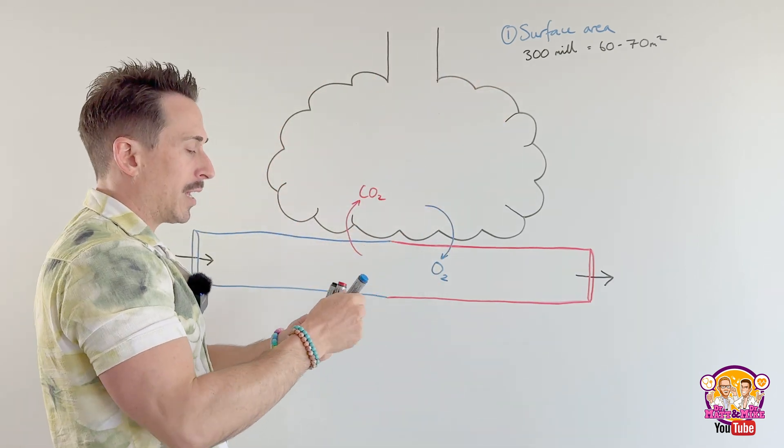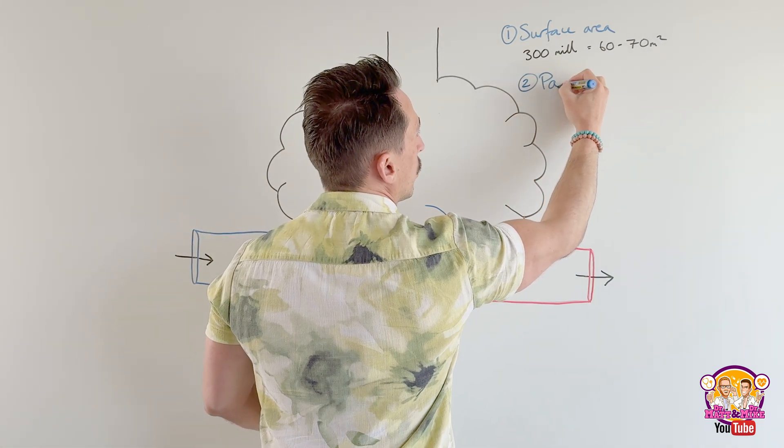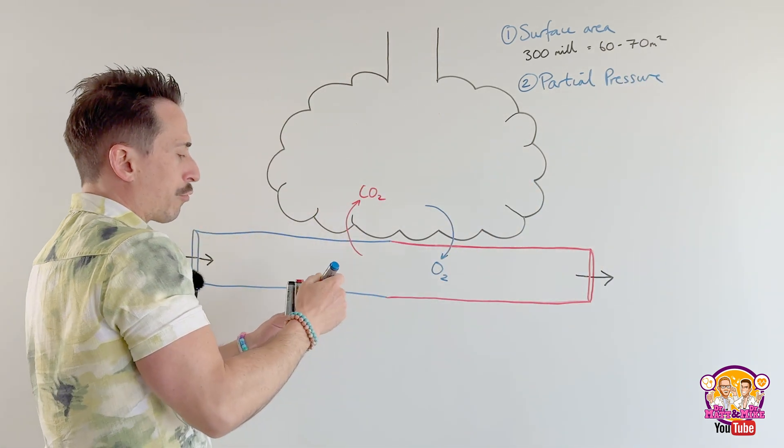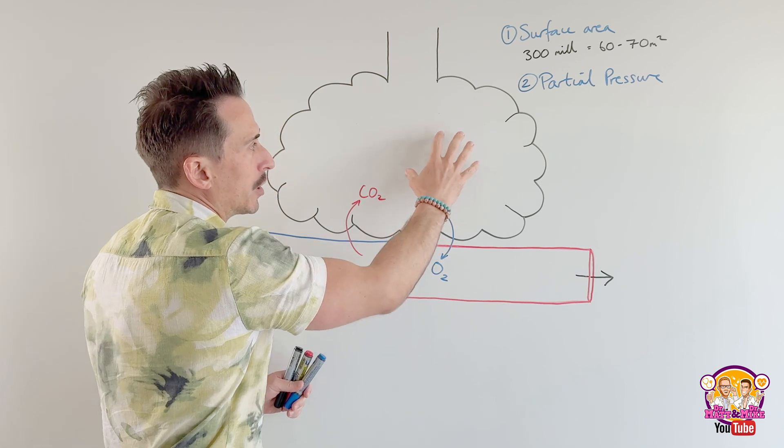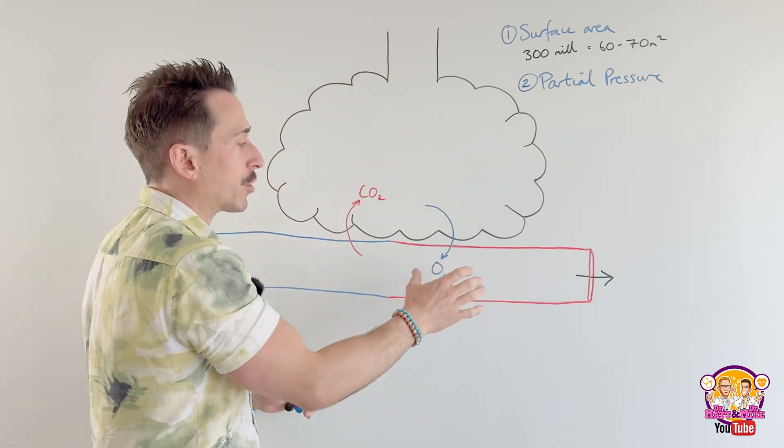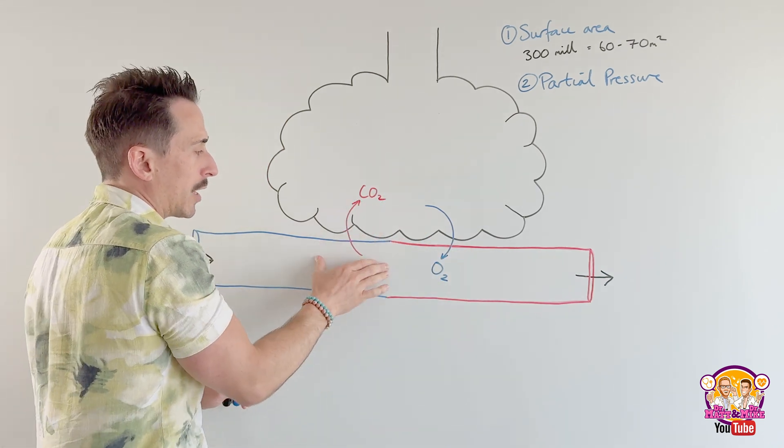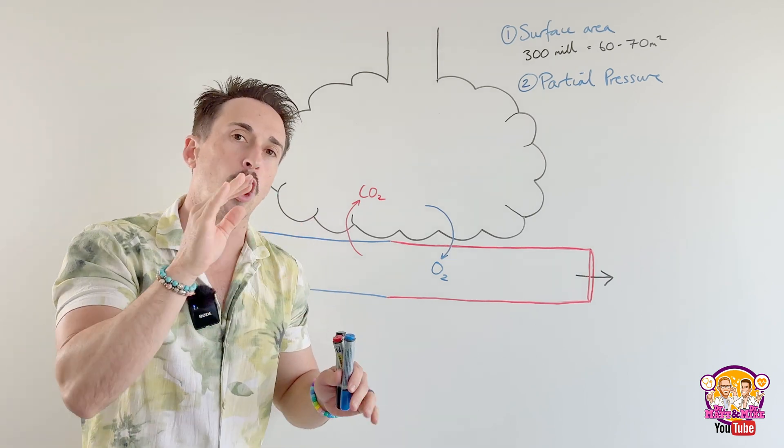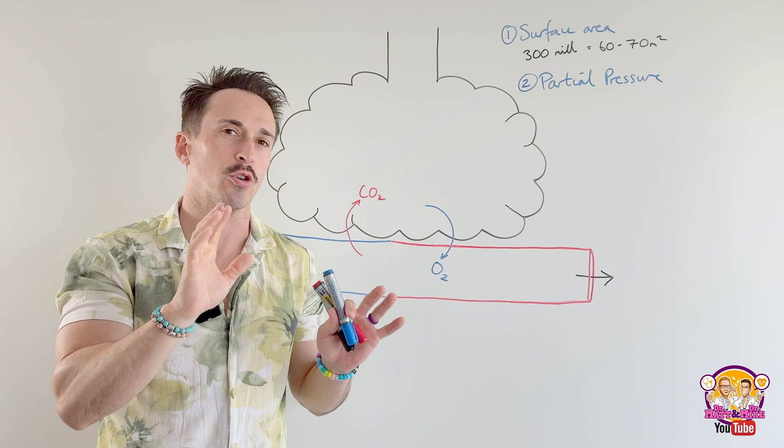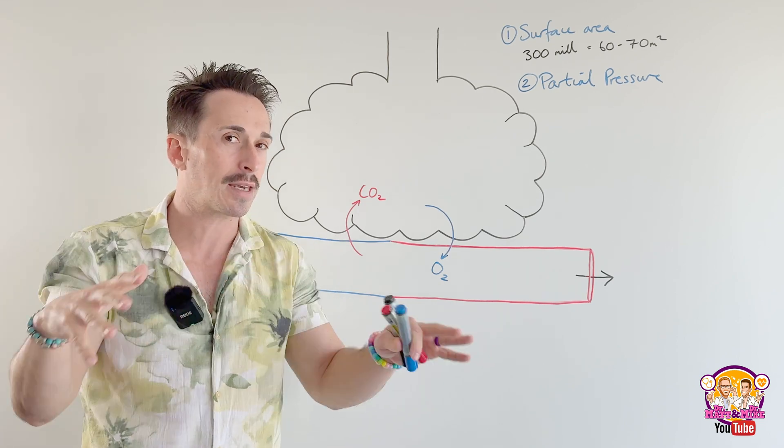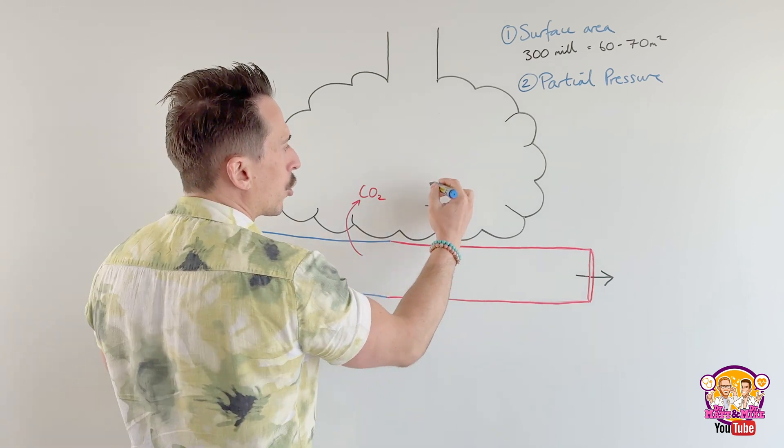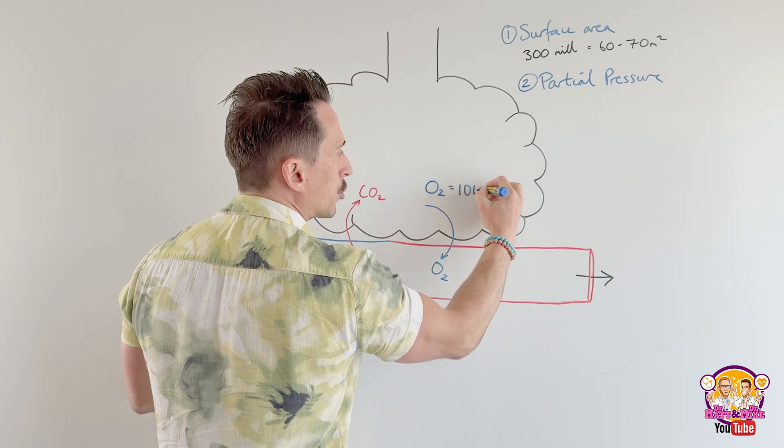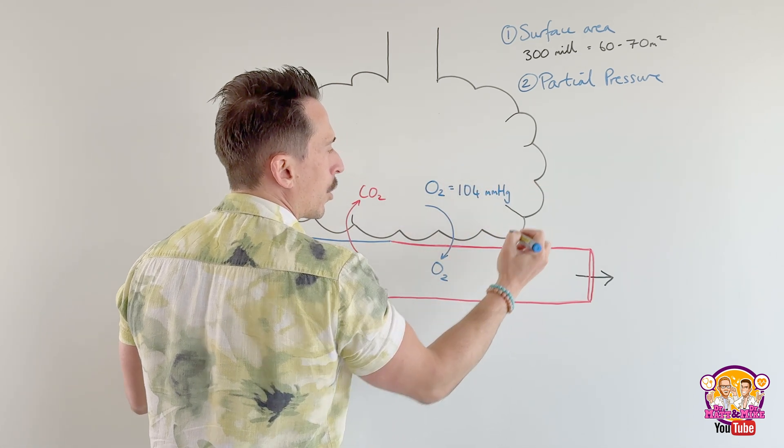The second that we need to focus on is what we call the partial pressure. Now the partial pressure is the individual pressure of each gas. So what is the pressure of oxygen in the alveoli and what is the pressure of the oxygen in the pulmonary blood vessel? What is the pressure of carbon dioxide in the pulmonary blood vessel? What is the pressure of carbon dioxide in the alveoli? This is important because gases will only move down their own concentration gradient. They don't care about the concentration of other gases, just themselves. For example, the concentration of oxygen in millimeters of mercury in the alveoli is around about 104 millimeters of mercury. That's the partial pressure.